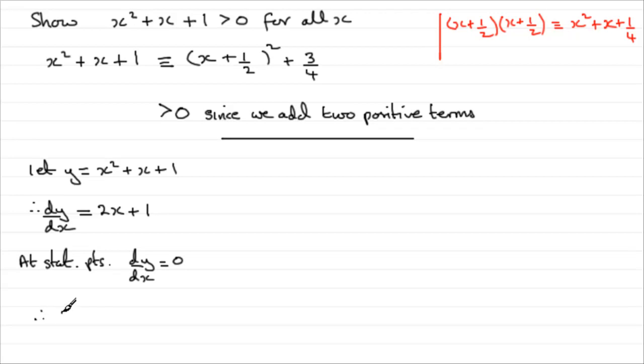So therefore we'd have 2x plus 1, which would equal 0. And if we solve this for x by subtracting 1 from both sides, we'd end up with 2x equals minus 1 and then divide by 2, we'd end up with x equals minus 1 half.